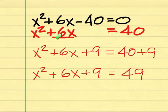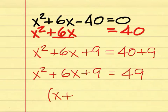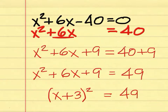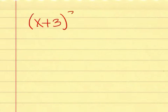By taking half of 6, which is 3, and squaring it to make 9 — and we added it to the other side as well. Therefore, you should have x plus that 3, which was half of 6. The quantity squared of x plus 3 will be equal to 49. Off to the side, we will do x plus 3 quantity squared. This is what we came up with on the left-hand side — it's a perfect square.